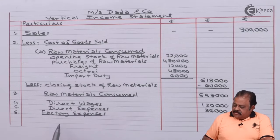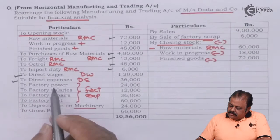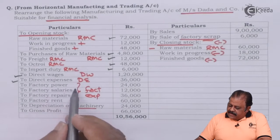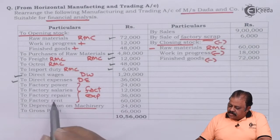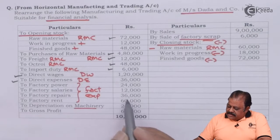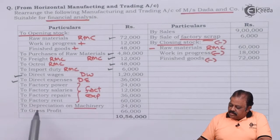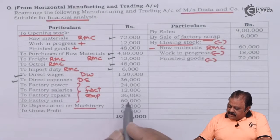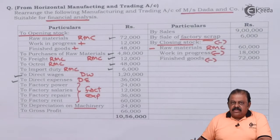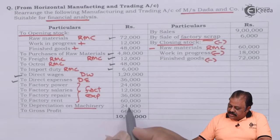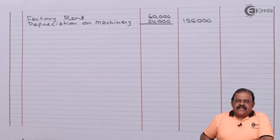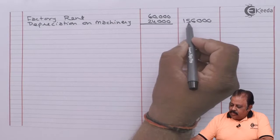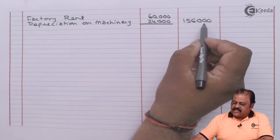To this we add factory expenses: factory power 24,000; factory salaries 12,000; factory repairs 36,000; factory rent 60,000; depreciation on machinery 24,000. Total factory expenses are 1,56,000.